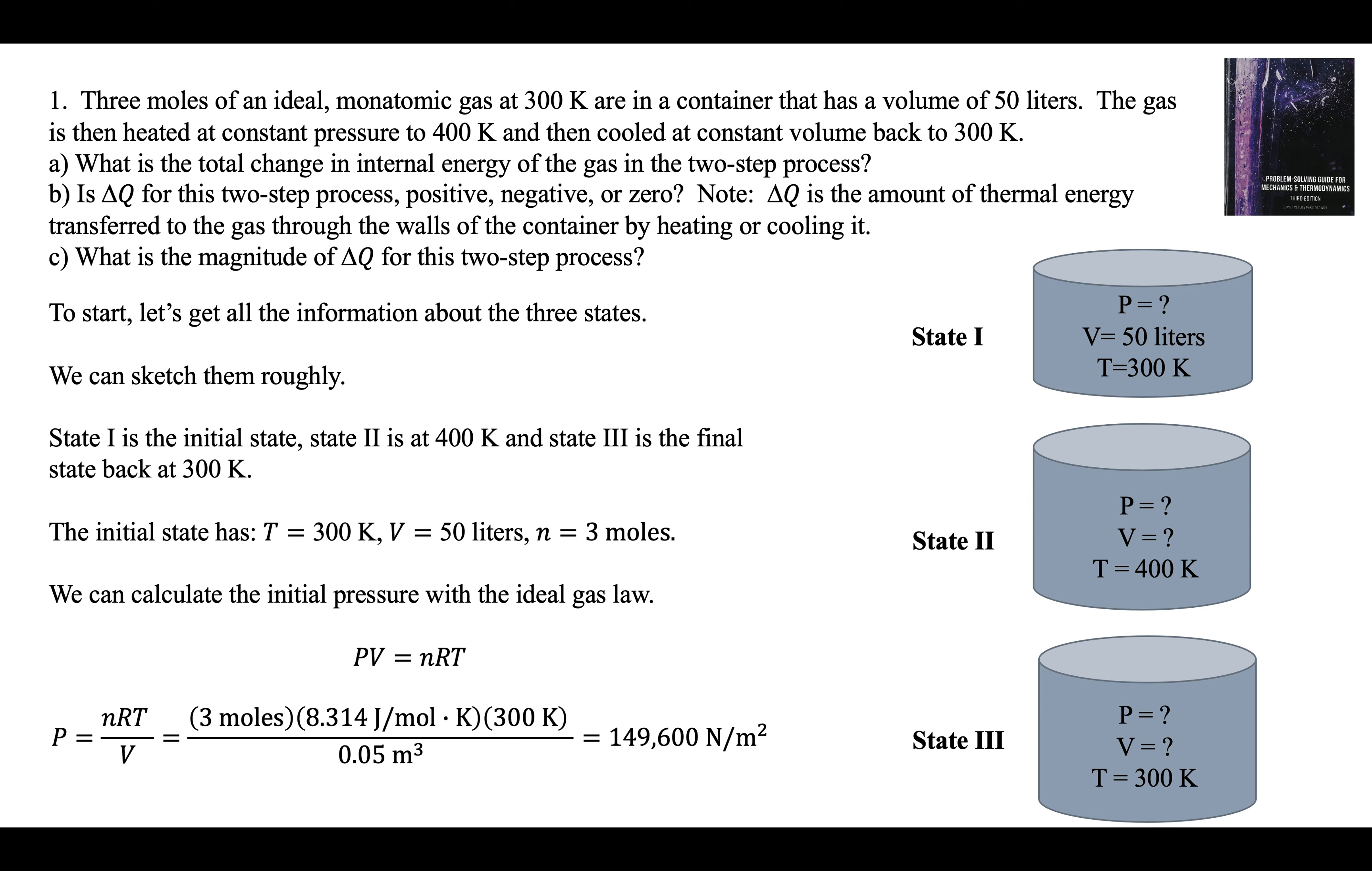PV is equal to nRT. Plug in the numbers. We get 149,600 newtons per square meter. That's the pressure in state one. Let's add that to the diagram. So there it is.